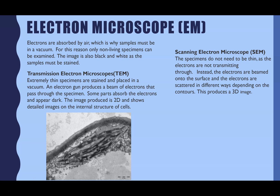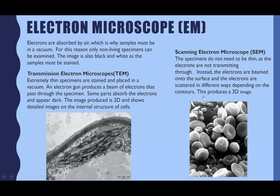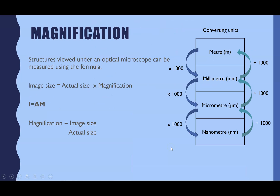The scanning electron microscope does not require very thin samples like the transmission electron microscope. Instead of transmitting through the specimen, electrons scatter and reflect off the surface. The different depths of the specimen affect the scattering of electrons, creating a 3D image. The SEM gives details about the texture and 3D depth of cells or organelles.